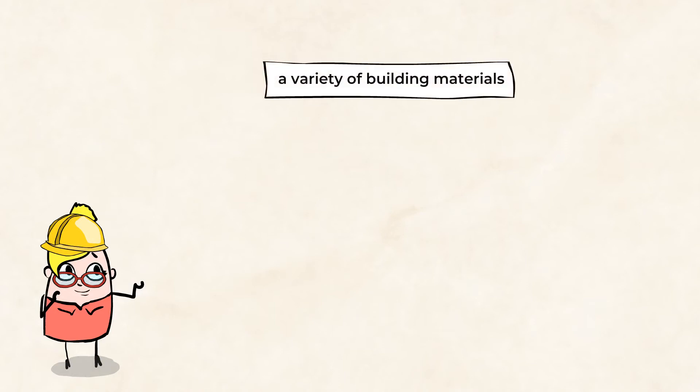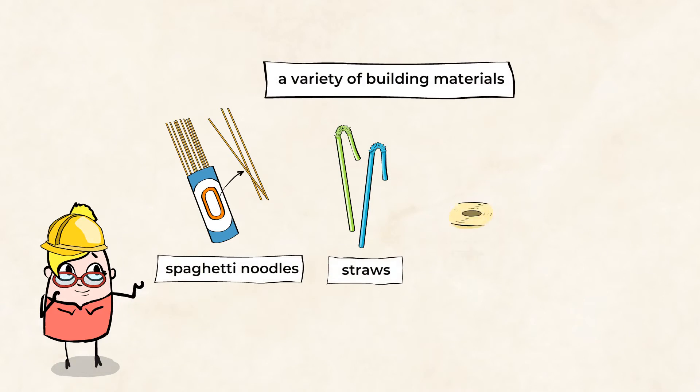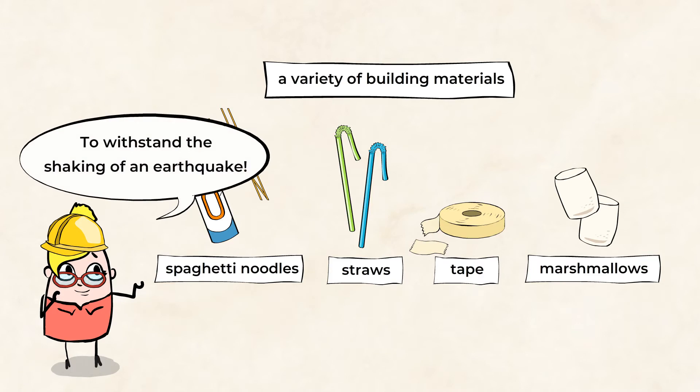Gather a variety of building materials, such as uncooked spaghetti noodles, straws, tape, and marshmallows. We'll use these materials to design and construct a structure. The goal is to build something that will be able to withstand the shaking of an earthquake.